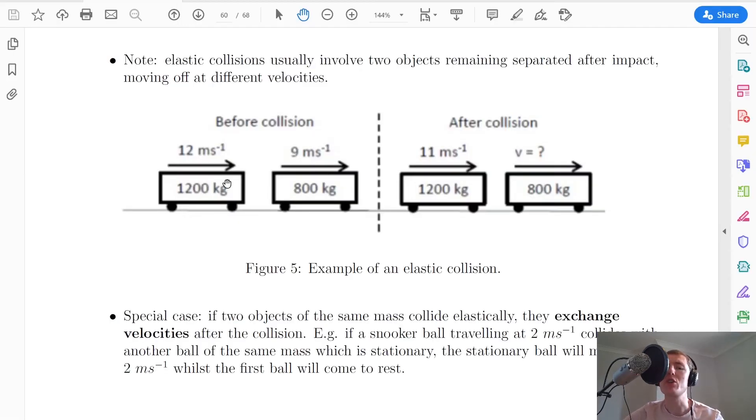So in this example, we've got a 1,200 kilogram trolley moving at 12 meters per second into an 800 kilogram trolley moving at 9 meters per second to the right already. And when those two collide after the collision, you'll see that the 1,200 kilogram trolley has lost a bit of velocity, which means that this one must have gained a bit of velocity to keep kinetic energy conserved.